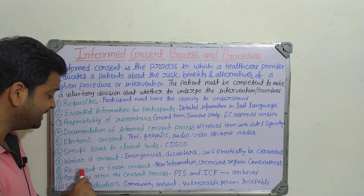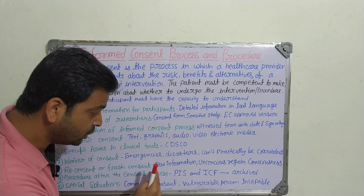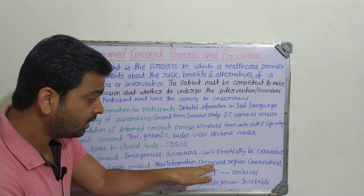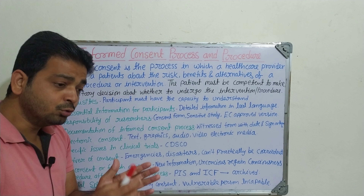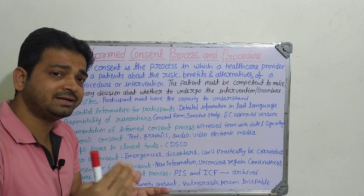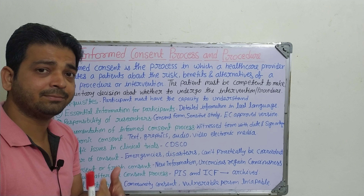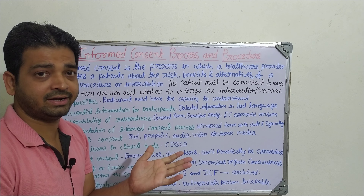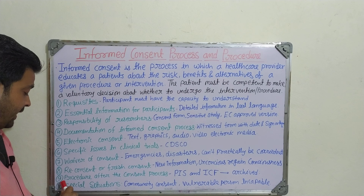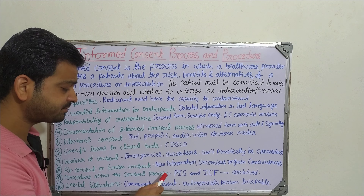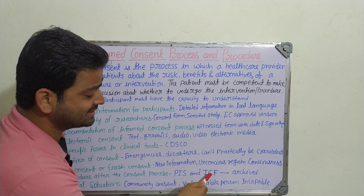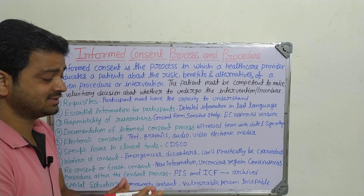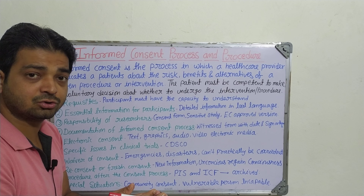The eighth one is re-consent or fresh consent — when new information comes about the new chemical entity or the study which is going on, or when an unconscious participant regains consciousness during the study. Suppose the particular individual, the participant, has gone into unconsciousness and again comes back into consciousness — they should sign the consent form again, because the old one he may have forgotten or something like that. So then the ninth one is the procedure after the consent process: the PSI and ICF have to be achieved and whatever consent forms are there, they have to be documented properly into electronic media.